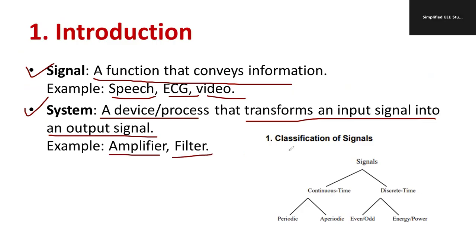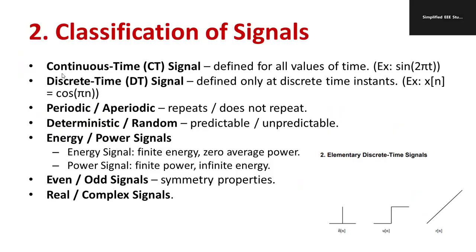Examples of systems include amplifiers and filters. The broad classification of signals includes continuous time signals and discrete time signals. Continuous time signals can be periodic or aperiodic. Discrete time signals are divided into even or odd signals, and energy or power signals. These are the basic definitions for signal, system, and classification.